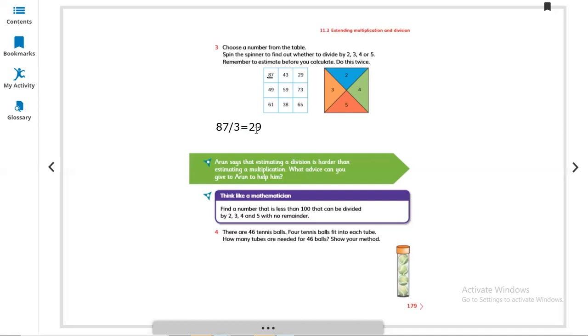Question number 4: Find a number that is less than 100 that can be divided by 2, 3, 4 and 5 with no reminder. Less than 100, this should be an even number which can easily be divided by 2, 3, 4 and 5. Which one? 60 is a number. If you divide 60 by 2, 3, 4 and 5, there is no reminder because 60 is in the table of 5, table of 4, table of 3, and table of 2. Yes, 60.